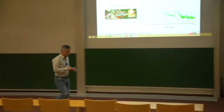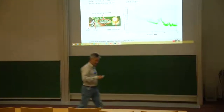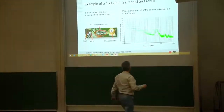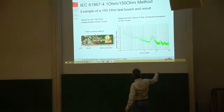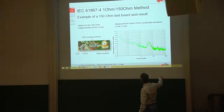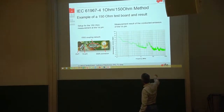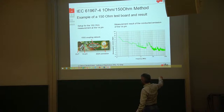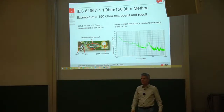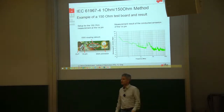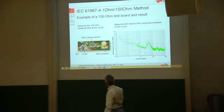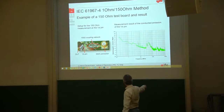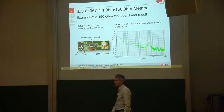We already talked about this part here. So why our electromagnetic emission that you can see here is somehow jumping up at a certain frequency — this frequency is 30 megahertz.